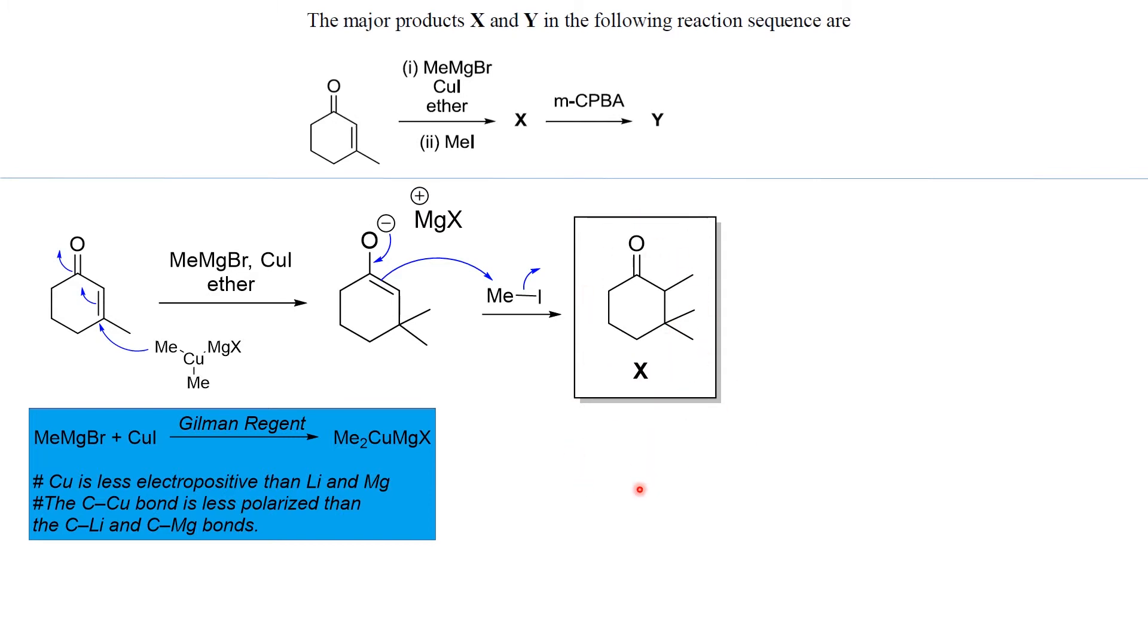So what we need to remember is, in this case, when we are adding organocupridate, it will always be conjugate addition. And when we are adding alkyl lithium or methyl magnesium bromide, it will be 1,2 addition.